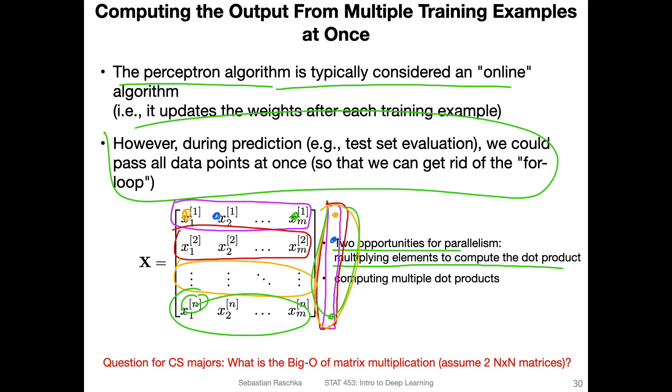The second way would be parallelizing the dot products. While you compute the dot product here, I'm showing you in pink, you can have a second process running that already computes the dot product between the second row and this vector. If you have four processors, for example, you could compute all these four dot products in parallel at the same time. You don't have to wait until one finishes. In that way, you can make the computation more efficient. So you have a little question for CS majors: what would be the big O complexity of matrix multiplication? If you assume that we have two n times n matrices, you can post this on Piazza.